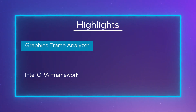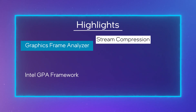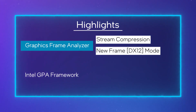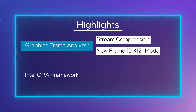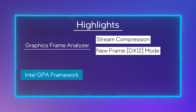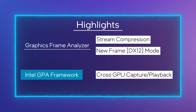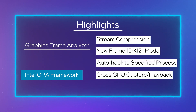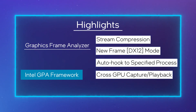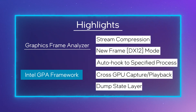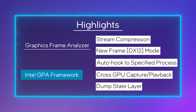For Graphics Frame Analyzer, we have added stream compression, allowing you to save disk space, and we have added a new dedicated frame capture mode that supports all the latest DirectX 12 features. For GPA Framework, our command line interface, besides adding support for the latest Vulkan SDK 1.3.243, we have significantly improved cross-GPU capture and playback functionality, implemented auto-hooking controls so that you can specify which process of your application you want to attach to, and added a dump state layer that allows you to view states of individual draw or dispatch calls.